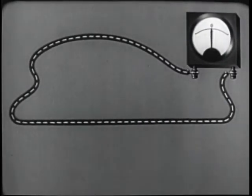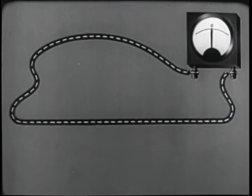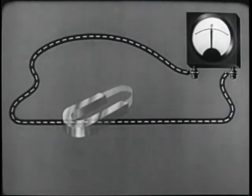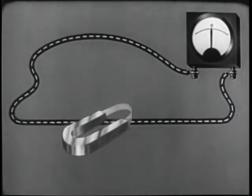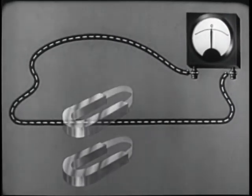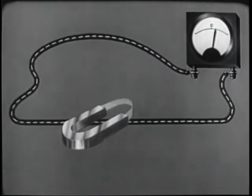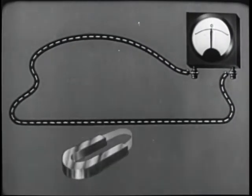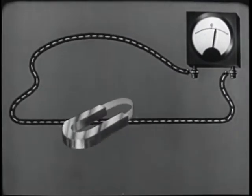If this wire is connected to a meter, we find there is no electric current flow. When the magnetic field is moved down, this meter shows current flow in one direction. If the magnetic field is moved up, the meter shows current flow in the opposite direction.